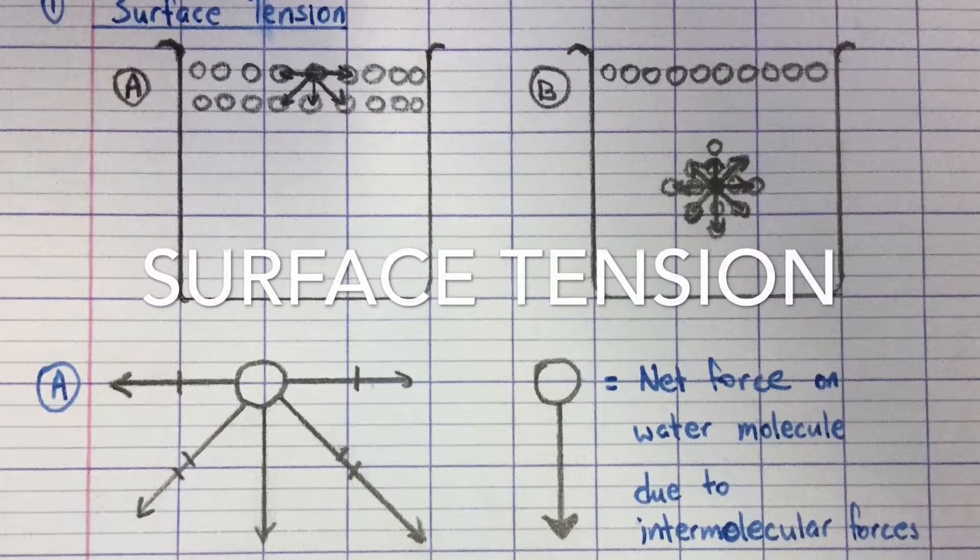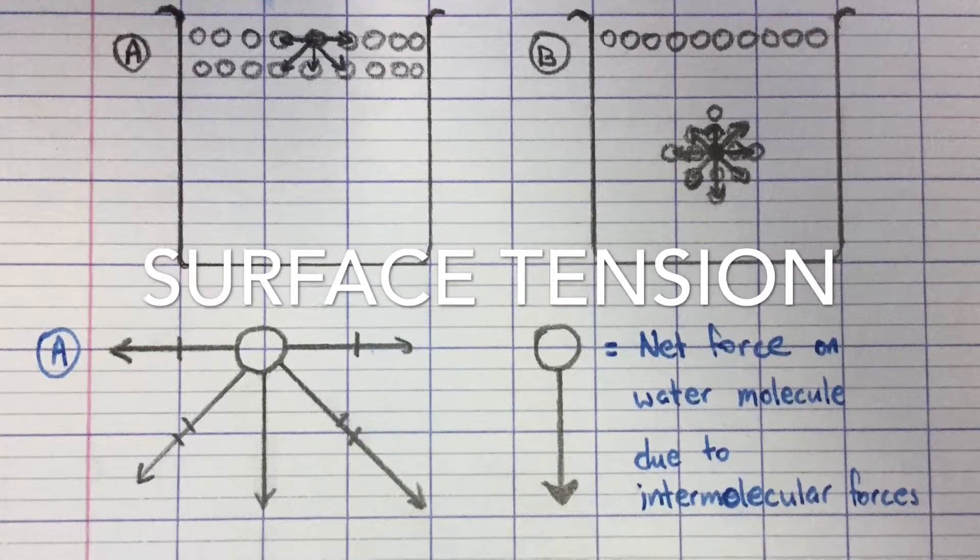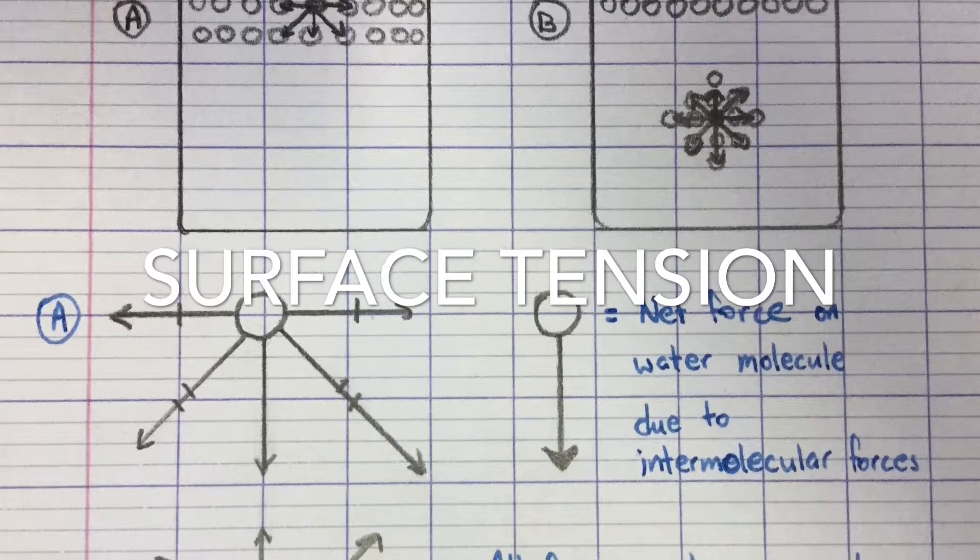Surface tension is the tension of the surface film of liquid caused by the attraction of particles in the surface layer.